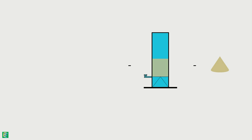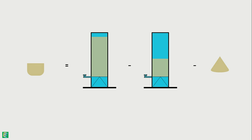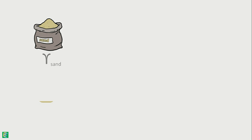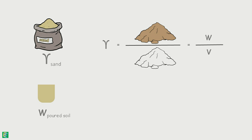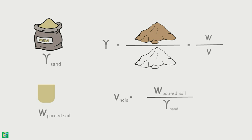If we subtract the weight of the cylinder with remaining sand and the weight of the conical heap of sand from the full cylinder weight, we can determine the amount of sand used to fill the hole — called the weight of poured sand. Since we know the bulk unit weight of the sand and the weight of sand used to fill the hole, we can determine the volume of the hole as: weight of sand used to fill the hole divided by the unit weight of that sand.